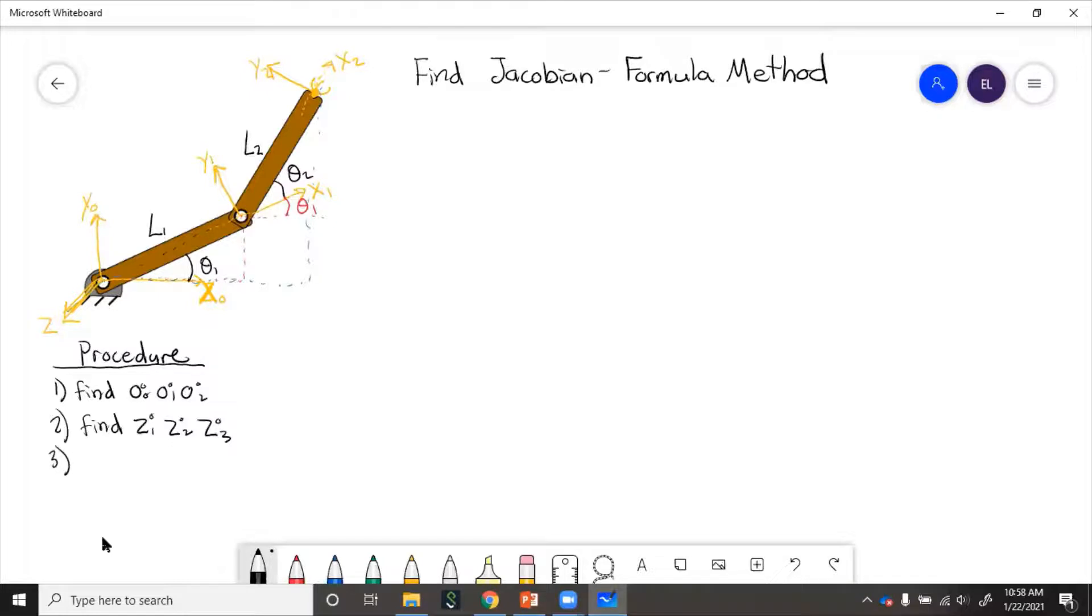Step three is use formulas. These are all revolute joints. So first we will find the joint origins, O0, O1, and O2. O0 in the zero frame is just zeros. Then O1, that's going to be this point. So that is L1 and then times cosine and sine of theta one.